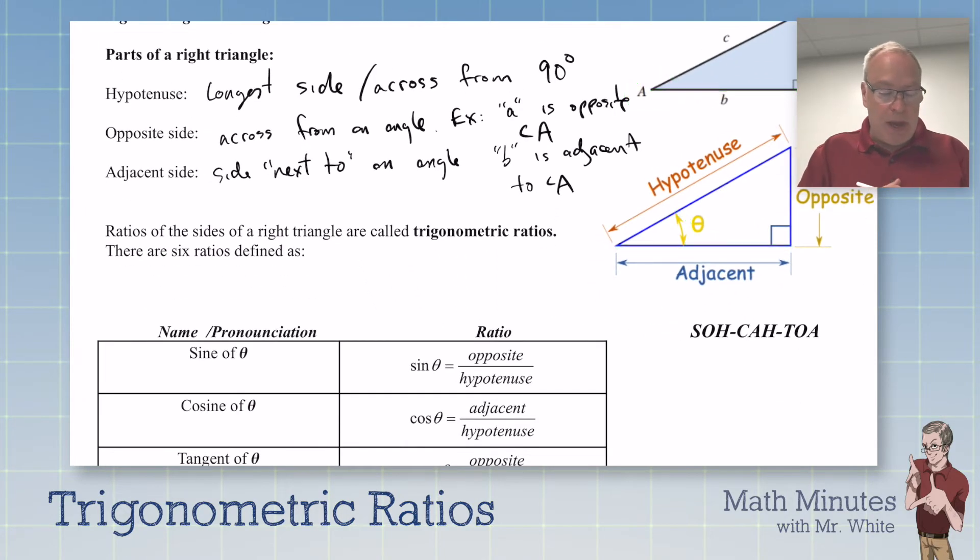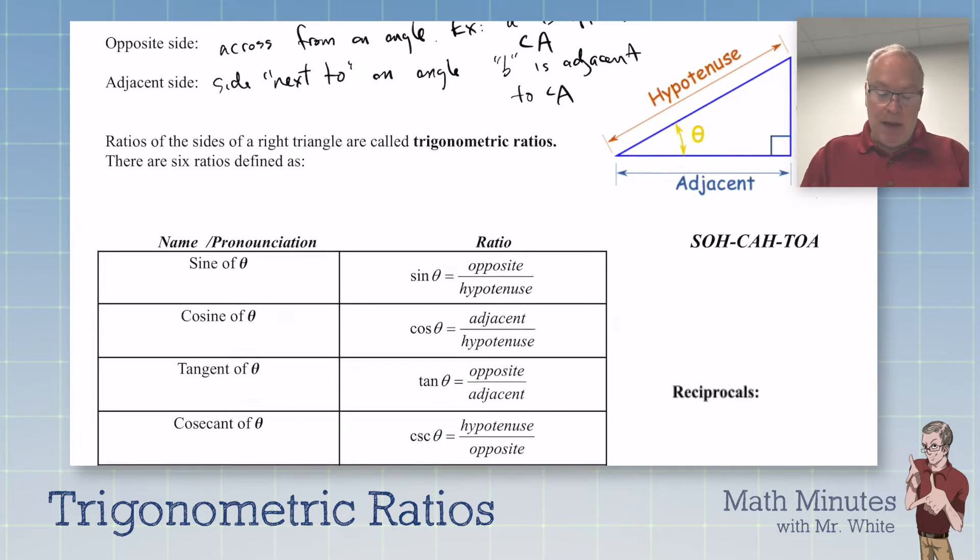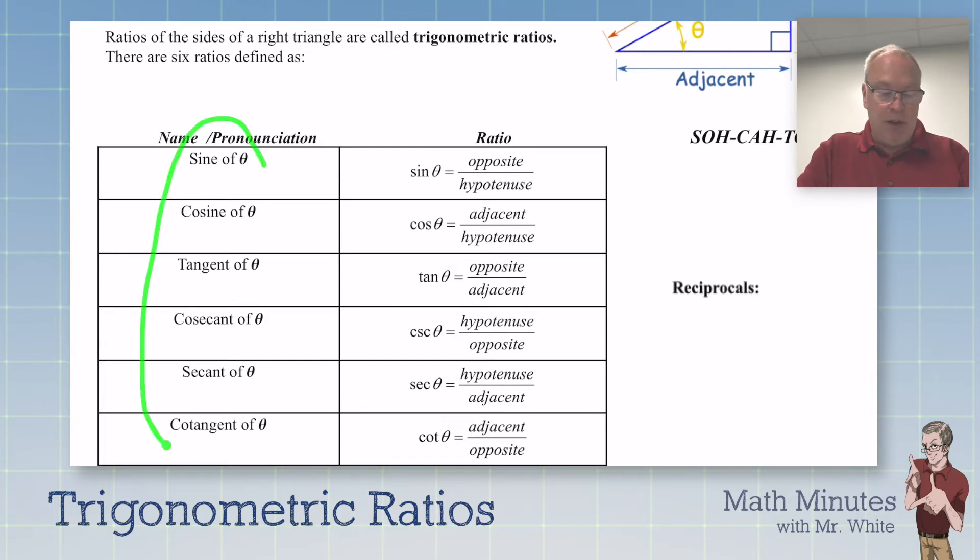All right, so we have some of that vocabulary out of our way. Now we have these six trig functions that are ratios of sides of a triangle. The six trig functions are sine, cosine, tangent, cosecant, secant, and cotangent. Quite a mouthful there. Early in your math career, you may have done sine, cosine, and tangent, but we're adding in these other functions, which are reciprocals.